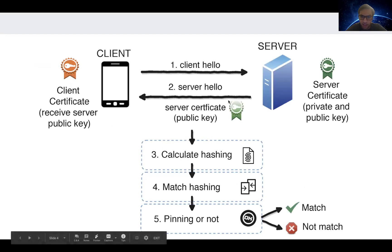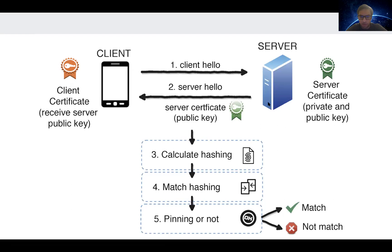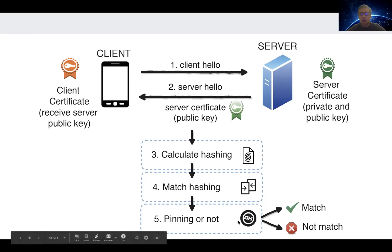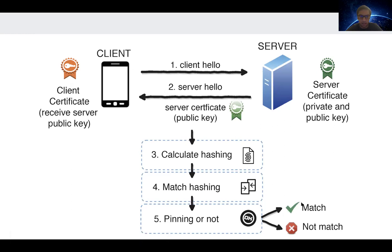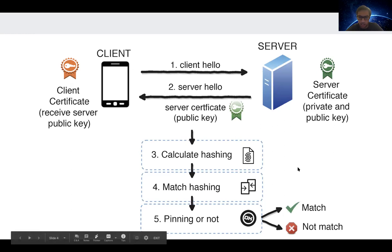This is a quick overview of how it works: the client sends a request, the server sends the response along with all the server certificates and the public key. On the client side, it calculates the hash, matches the hash, and then looks at the pinning — whether the public key matches what the client had from the very beginning. If not, then you reject it.